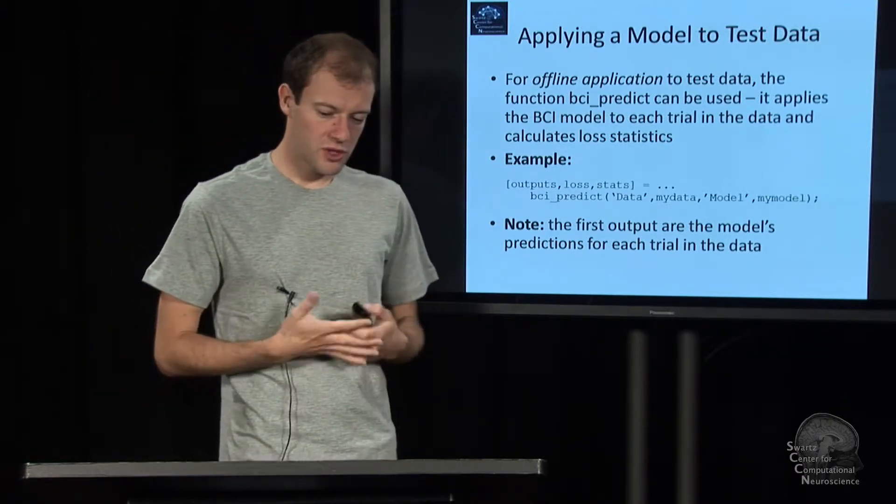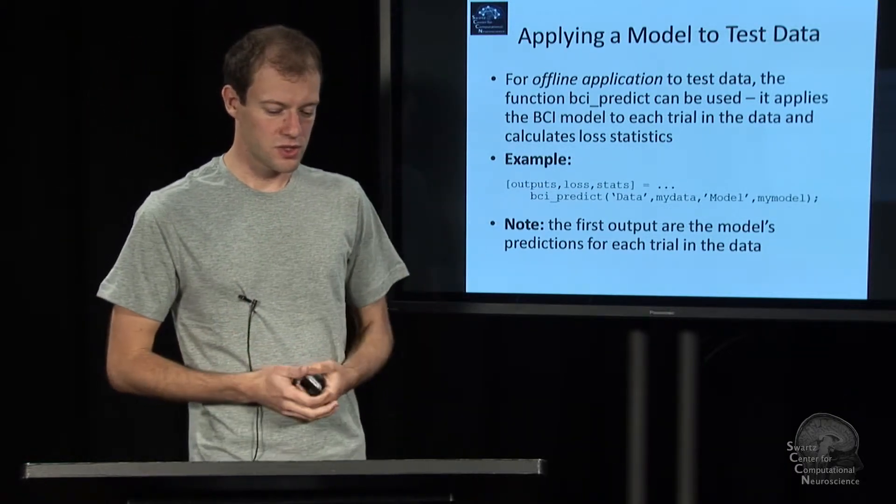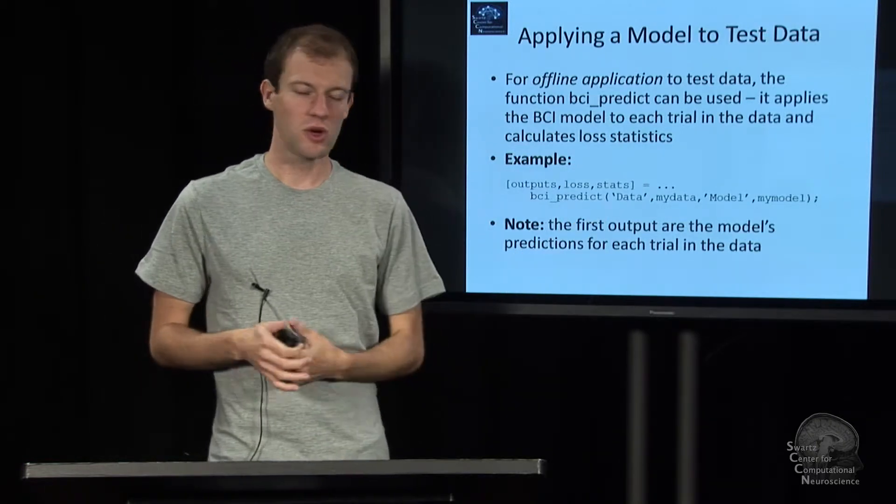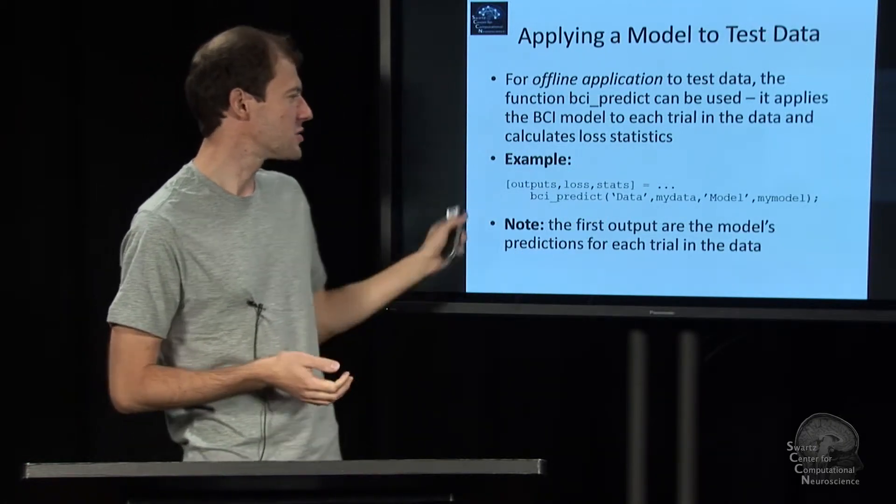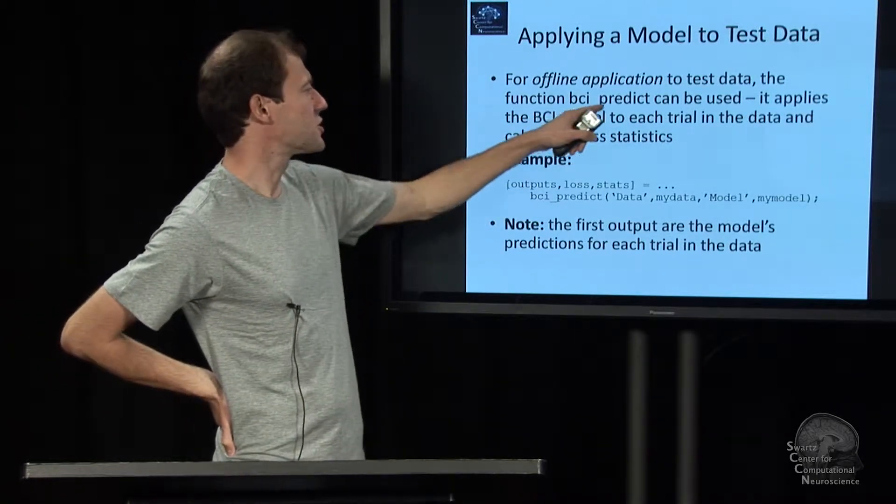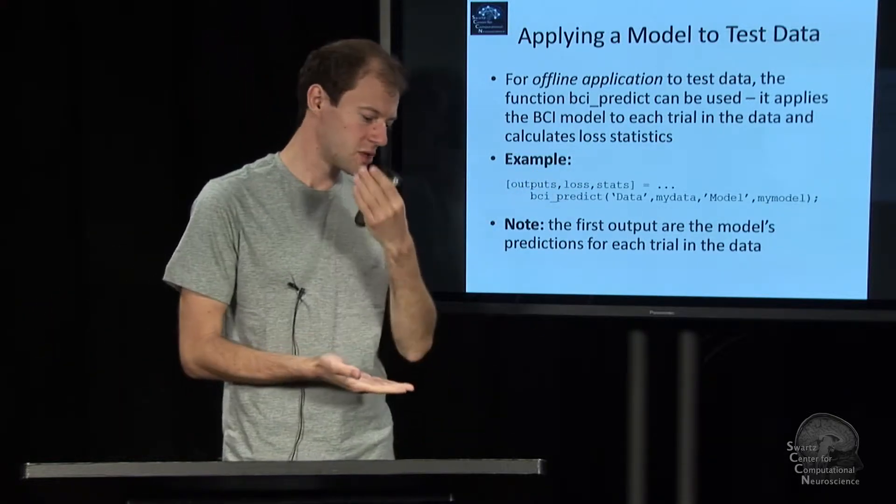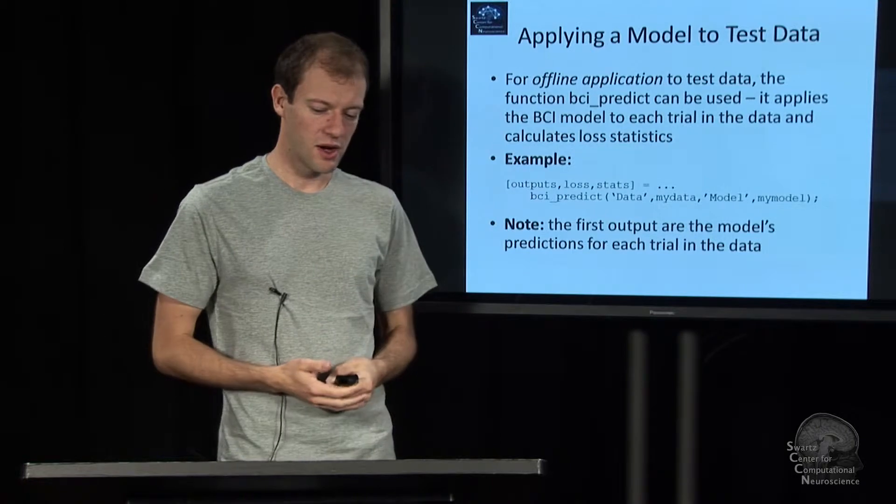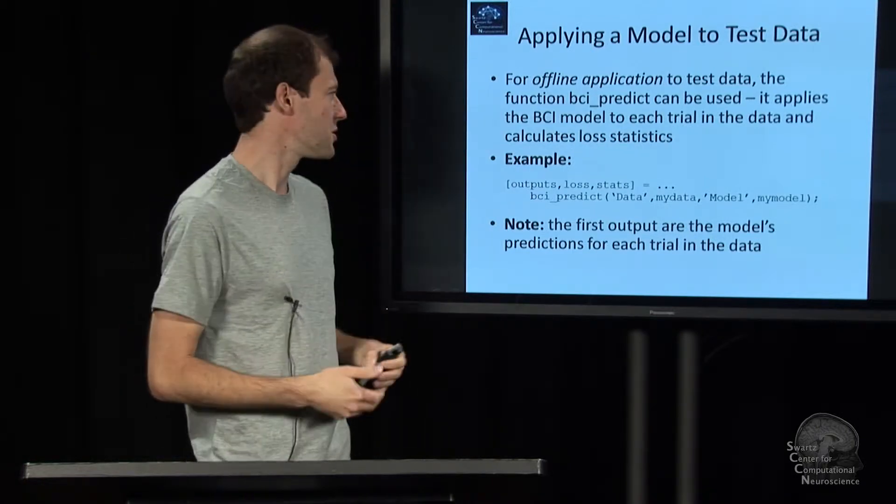So the other big use case is you have calibrated your model. You have visualized it. You have a figure for your paper. You want to, say, apply this offline to some new data. That's the function called bci_predict. So these are the various tasks that you can do with the toolbox. Like I said earlier, the various pipeline steps that you can run.